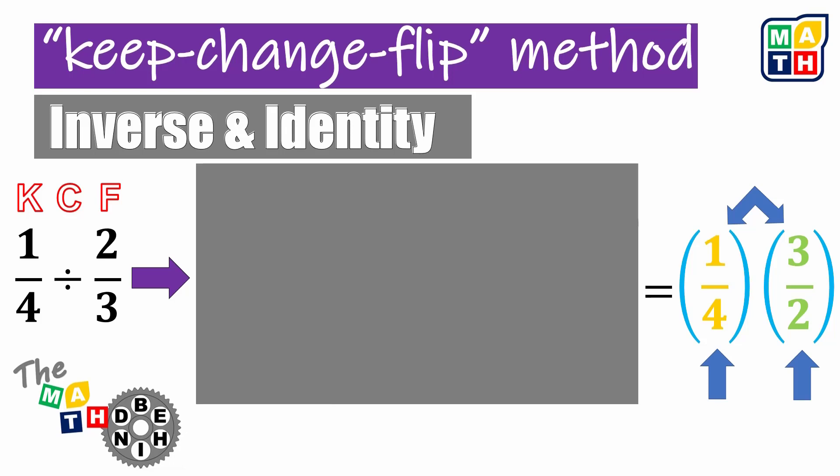As a summary, it looks like we kept 1 fourth, we changed the operation, and we flipped 2 thirds.